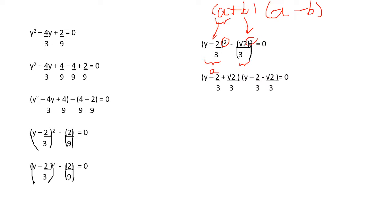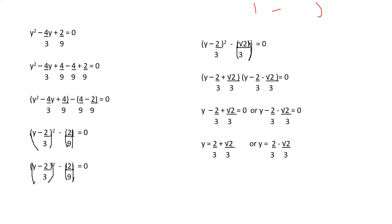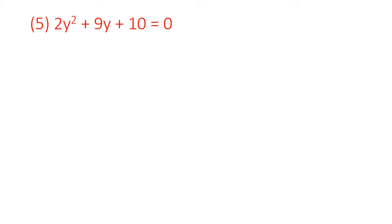After this we separate them and write each bracket equal to 0. So the first bracket equals 0 and the second bracket also equals 0. Then we find the value of y. Shifting minus 2 upon 3 to the other side gives plus 2 upon 3. Since the denominator is the same, we add the numerators and write the two roots as 2 plus root 2 upon 3 and 2 minus root 2 upon 3. These are the roots of the equation.